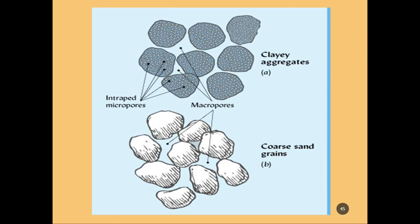We have macropores, which are the large pores between the soil particles, and then we have micropores on the soil aggregates themselves.